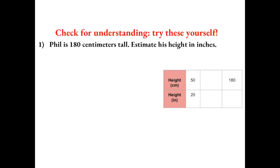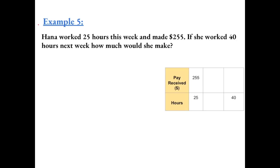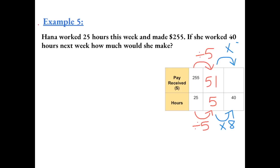Try this yourself to check for understanding. Example 5. Hannah worked 25 hours this week and made $255. If she worked 40 hours next week, how much would she make? We can stop at 5 hours: dividing by 5 gives us $51 for 5 hours. Then we multiply by 8 to get to 40 hours, and do the same to the amount of money. 51 times 8 gives us $408.